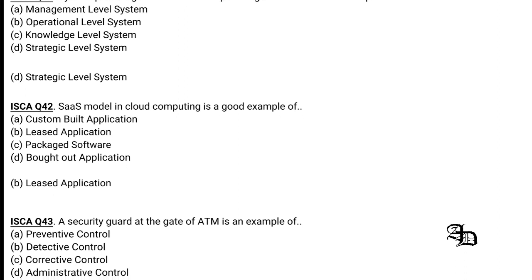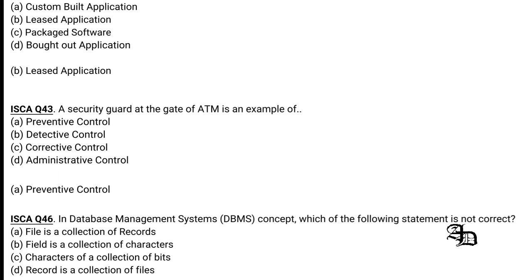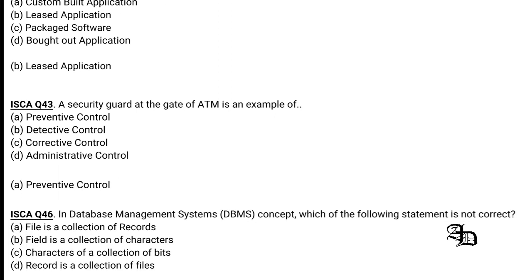Question 15: A security guard at the gate of an ATM is an example of which type of control — preventive, detective, corrective, or administrative? A security guard serves as a preventive control, so option A is the correct answer.